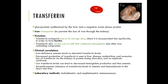Transferrin is a glycoprotein synthesized by the liver. It is a negative acute phase reactant, so it will go down with inflammation. It transports iron to prevent its loss through the kidneys. Transferrin transports iron to storage sites where it is incorporated into apoferritin and then into ferritin; it also carries iron to cells that synthesize hemoglobin in the bone marrow. Mitochondria also contain iron, so iron is part of energy production.